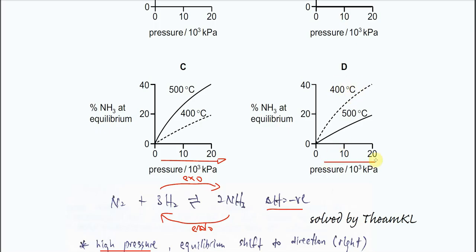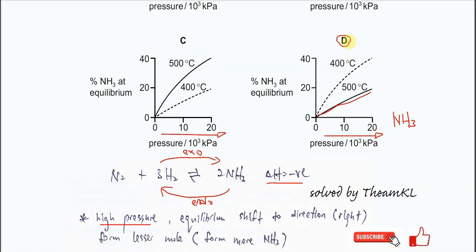When temperature is lower, more yield is formed. And when pressure increases, more ammonia is formed. Looking at 500°C: when pressure increases, the formation of ammonia increases, so the graph goes up. And the 400°C graph is relatively higher than the 500°C graph. Therefore, the answer is confirmed: D. That's all, thank you.